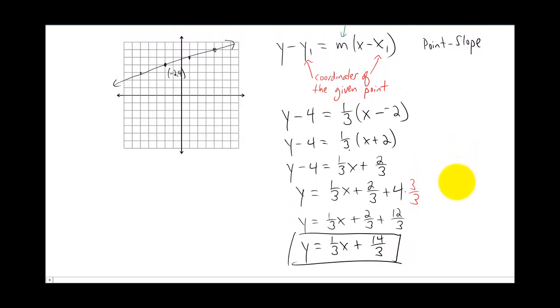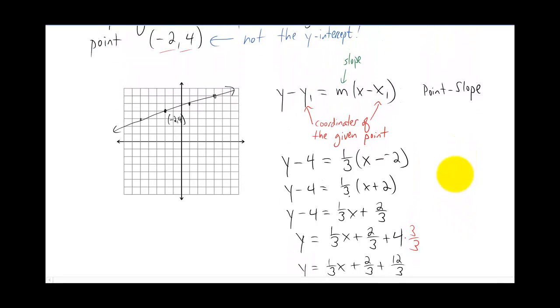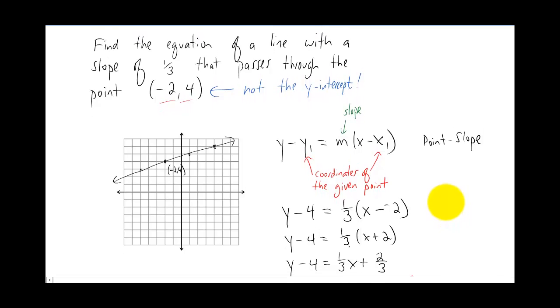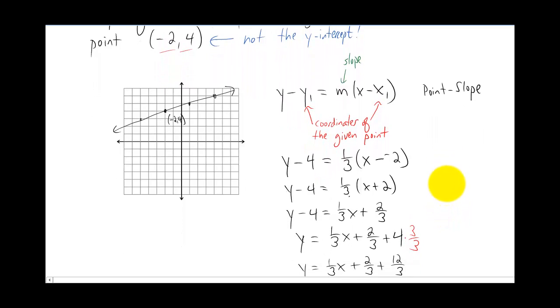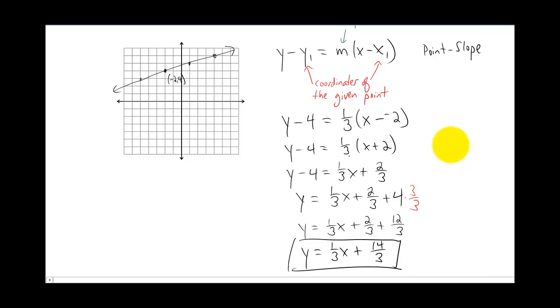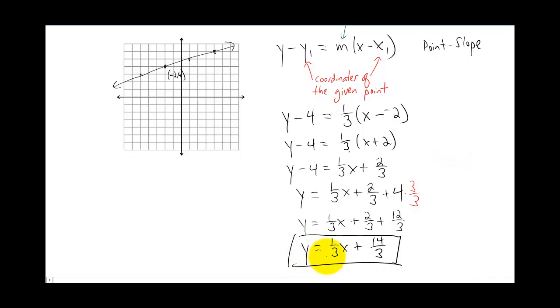Okay that's it. We found the equation of the line that has a slope of one third that passes through the point negative two four. We like the equation of the line in slope intercept form because now we can easily pick out the slope as one third and the y intercept is fourteen thirds.